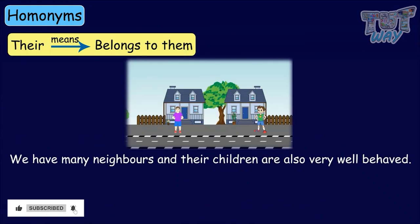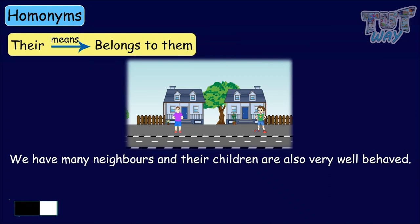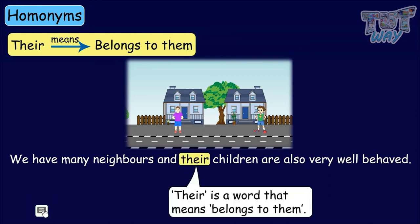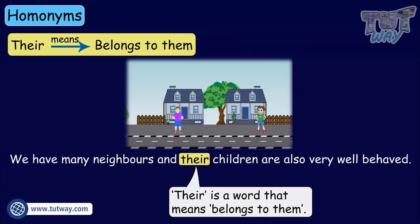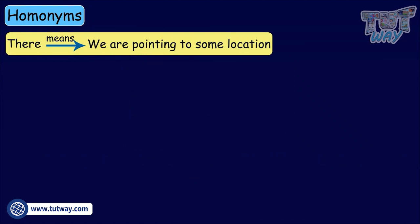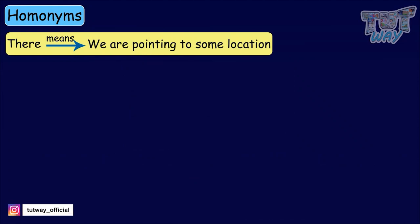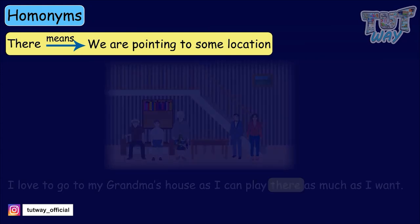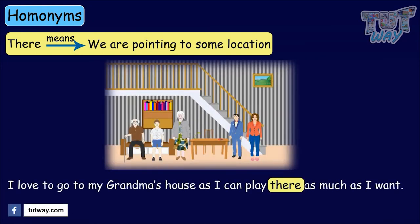We have many neighbors, and their children are also very well behaved. Here, their is a word that means belongs to them. Next word is there. This means that we are pointing to some location — for example: I love to go to my grandma's house, as I can play there as much as I want.